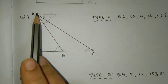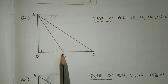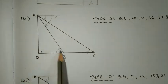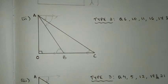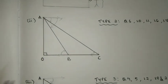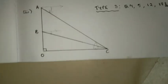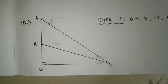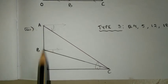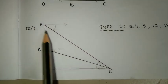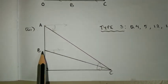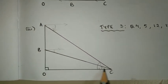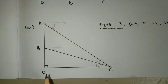Type 2 is a triangle. In type 1, we have only one triangle.